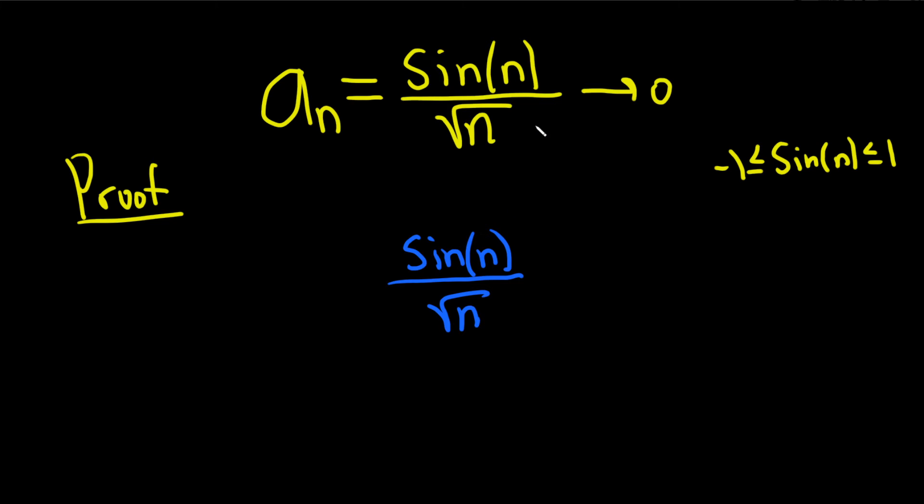We can use this: it's less than or equal to 1, and greater than or equal to -1. So -1/sqrt(n) ≤ sin(n)/sqrt(n) ≤ 1/sqrt(n). Now we have to explain why these bounds go to zero.